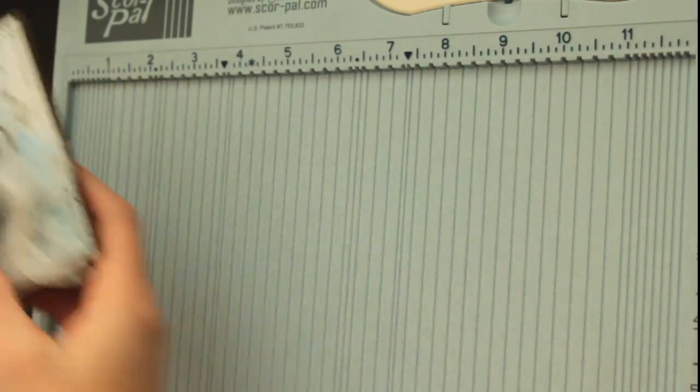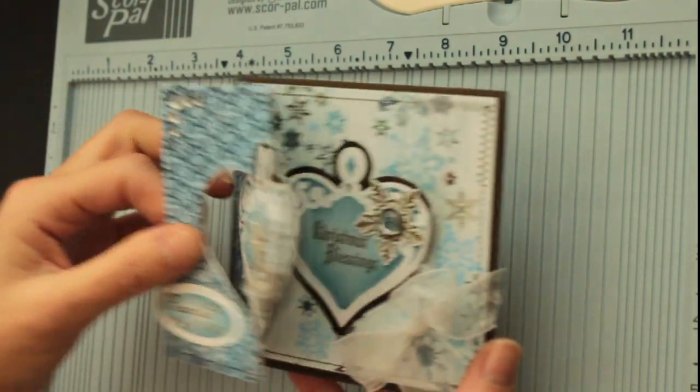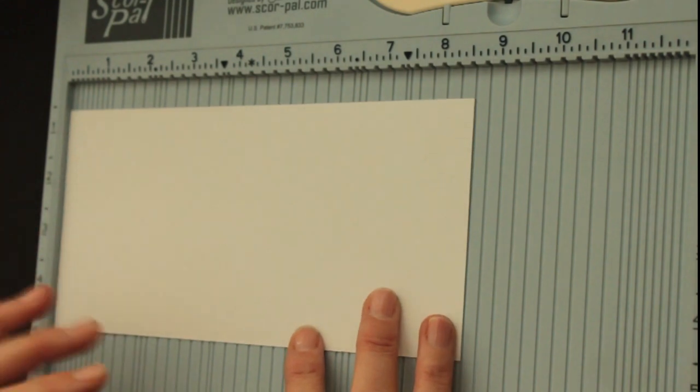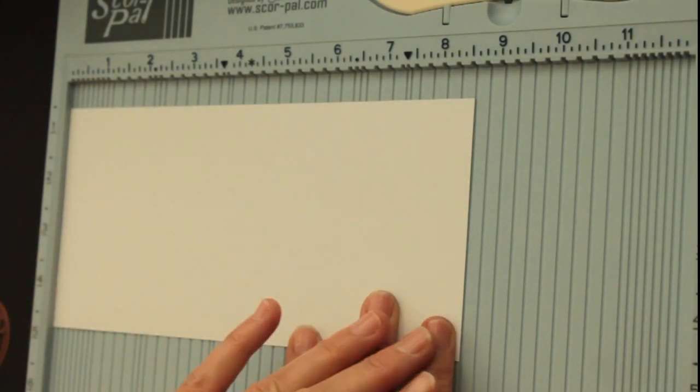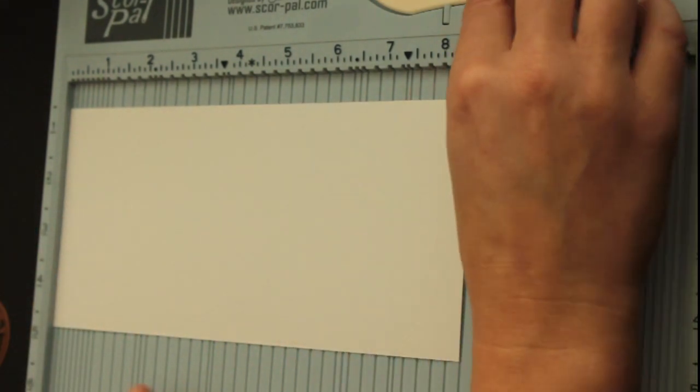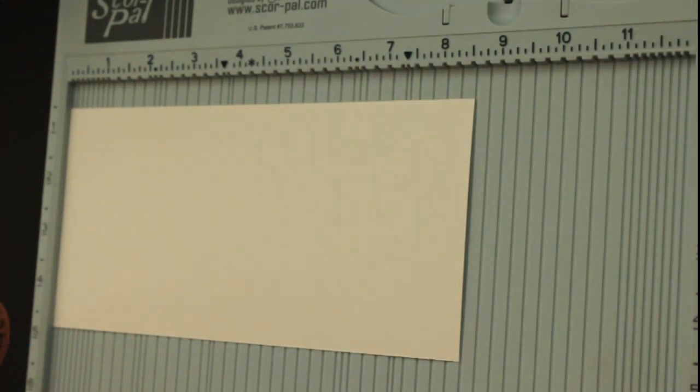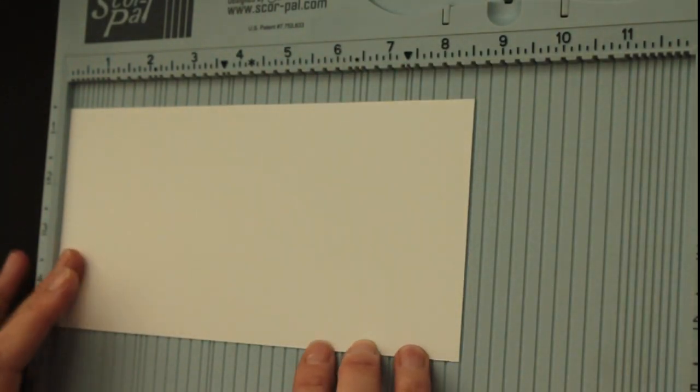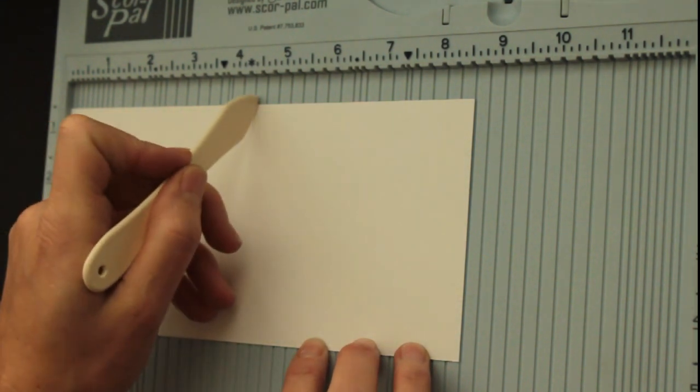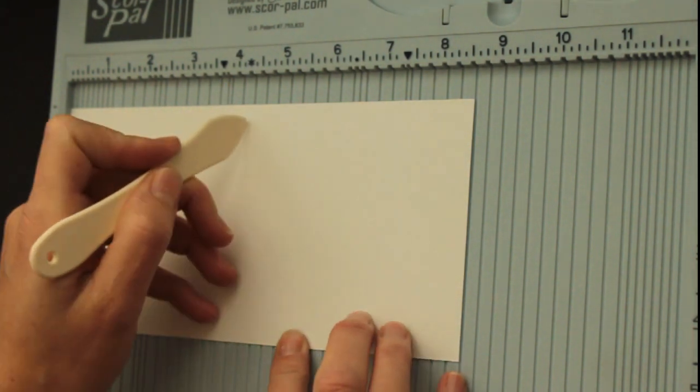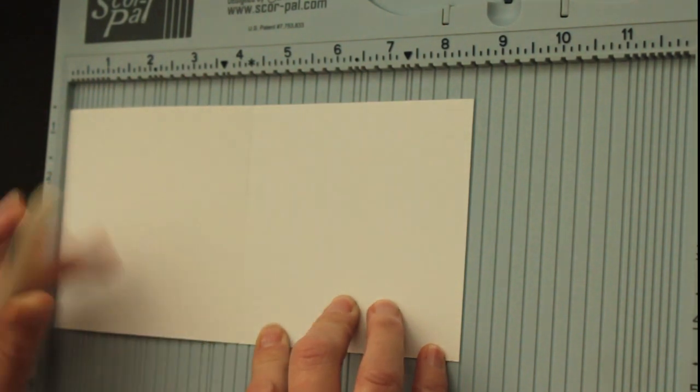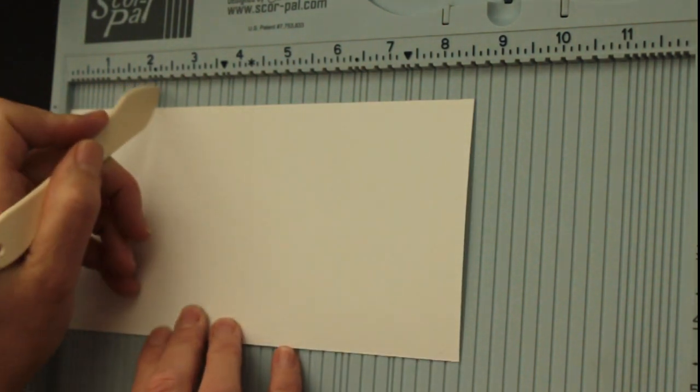I created my Z-fold swing sample out of four and a quarter by eight and a half pieces of cardstock, but you can use any size or turn any card size into a Z-fold card. All you do is score it at half of the card size, which for me is four and a quarter, and then a quarter of a card size, for me it's two and an eighth.